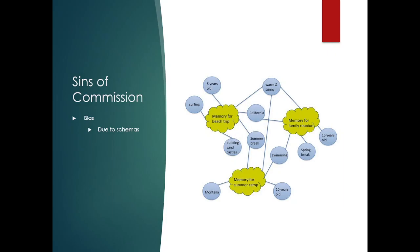It's a bit odd that the beach trip isn't connected to swimming — I would have connected those too. We've got details like how old the person was at different events, what they did, where they went. The family reunion and beach trip were both in California; summer camp was in Montana. So we've got a variety of overlapping nodes.